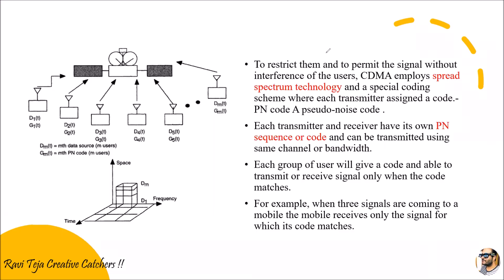The signal coming back from the satellite will also carry a code that matches ours, and this code is carried along with the signal. When that signal reaches our receiving end, it again checks whether both codes are matching. Since we sent the original request, the code returning from the satellite obviously matches. After the code is verified, the signal is delivered to the desired output location. Each transmitter and receiver has its own PN sequence or code, and this whole process can be carried out using the same single channel or bandwidth.